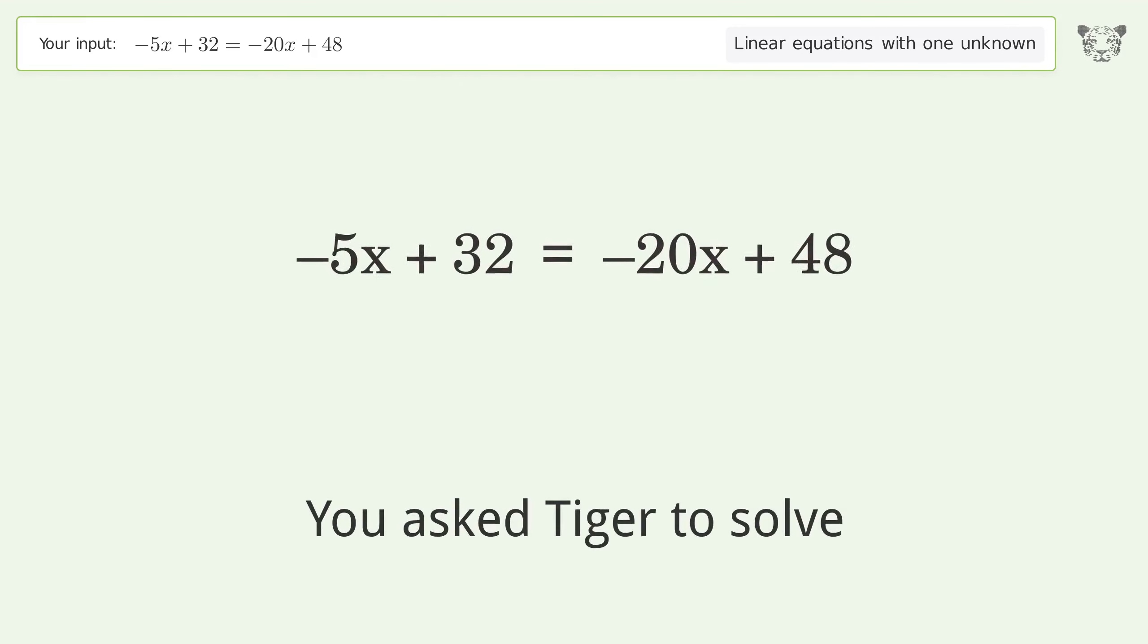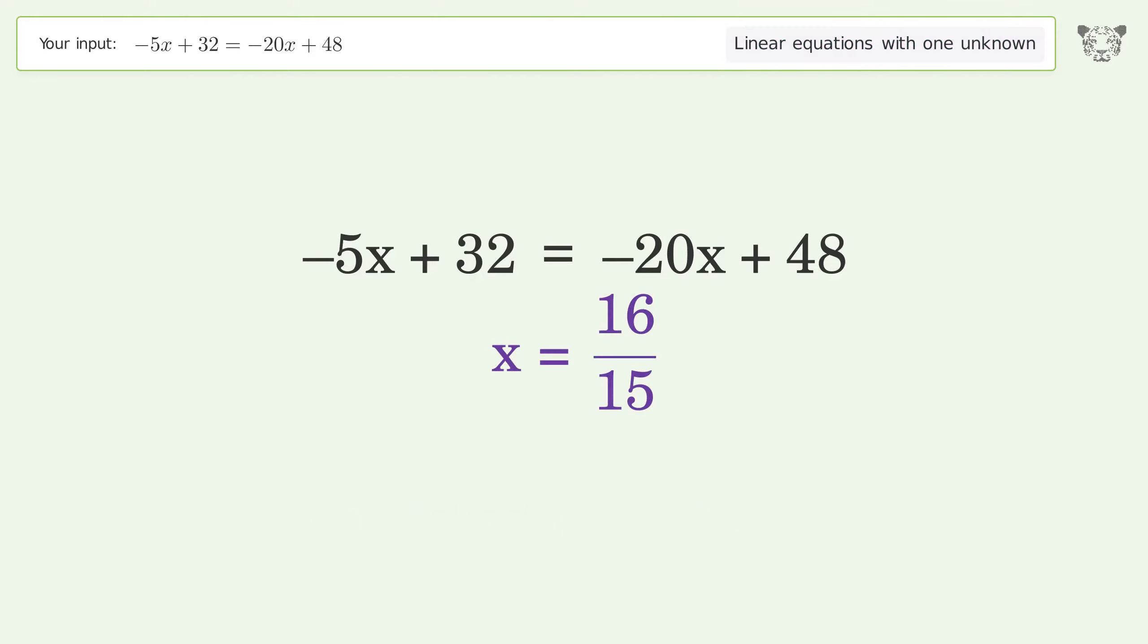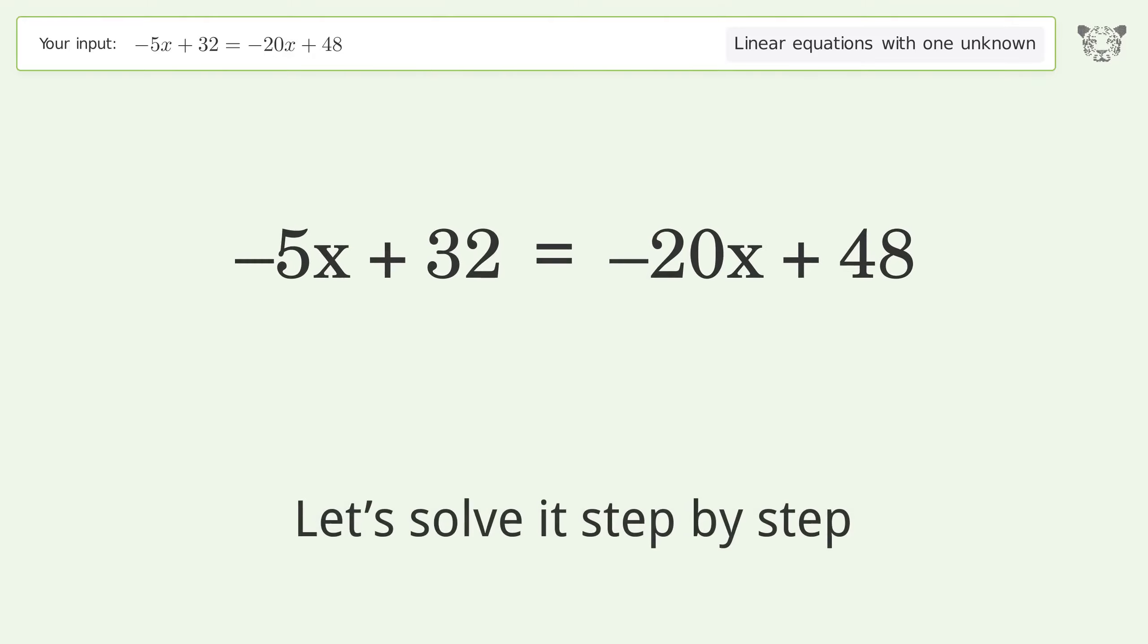You asked Tiger to solve this linear equation with one unknown. The final result is x equals 16 over 15. Let's solve it step by step.